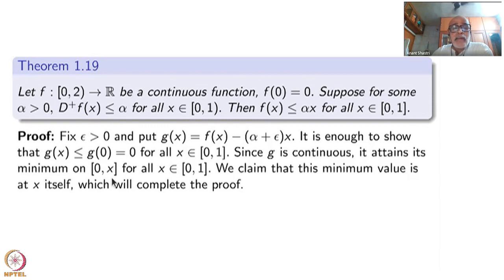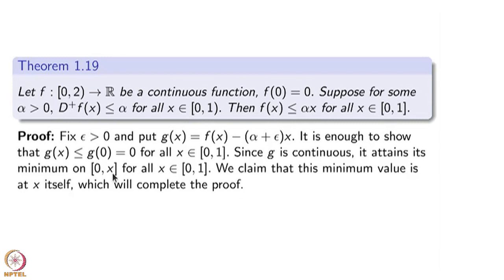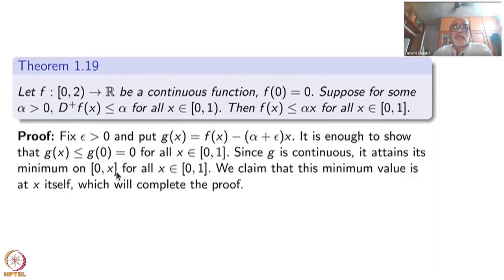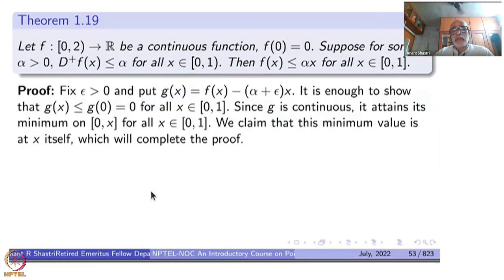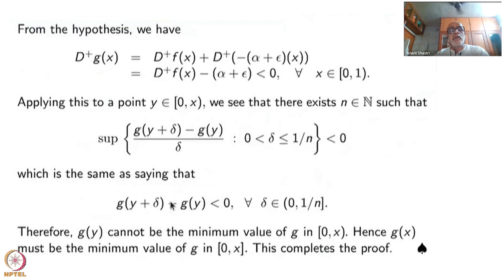If the minimum is at x, then for all other points g(x) is less than or equal to that minimum, hence g(x) ≤ g(0) = 0, which is what we want. We are proving a stronger statement — that the function attains its minimum value at x — but ultimately we use only that g(x) ≤ g(0) ≤ 0. The Dini derivative D+ will help us prove this claim.